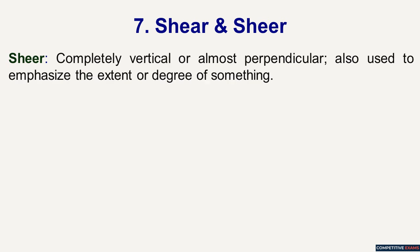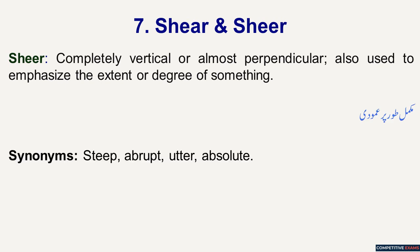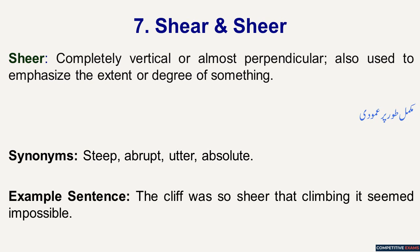Sheer means completely vertical or almost perpendicular. It is also used to emphasize the extent or degree of something. In Urdu, mukammal taur par umoodi. Its synonyms are: steep, abrupt, utter, absolute. Example sentence: The cliff was so sheer that climbing it seemed impossible.